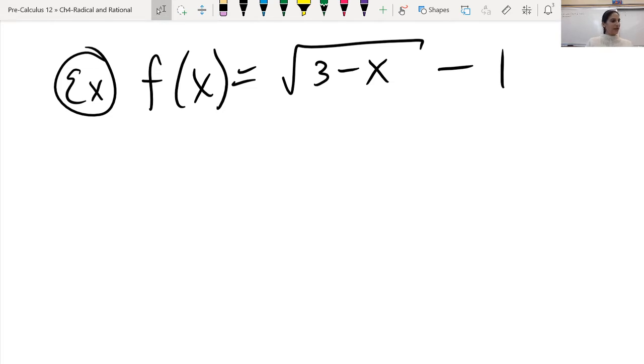So if I zoom in on this, the first thing that I want to do here is I want to, let's first start by just setting it equal to 0. So I know it's going to be root 3 minus x minus 1. We set the whole thing equal to 0, and then it tells me to isolate the radicals, so I add 1.